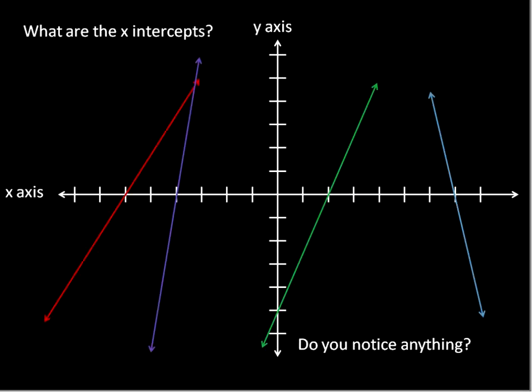Let's go ahead and do some labeling here of these lines. We're going to look and see what are the x-intercepts for these lines. We'll start with the red line here on the left. We count negative 1, negative 2, negative 3, negative 4, negative 5, negative 6. That's our x value for the point where it crosses the line, and our y value is 0. So the x-intercept of the red line is the point (negative 6, 0) — that's where it crosses the x-axis.